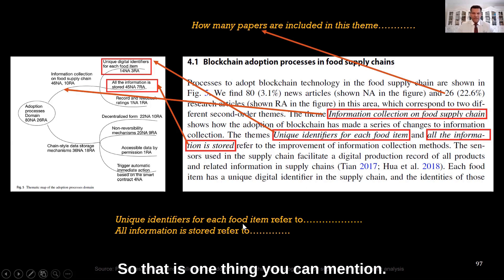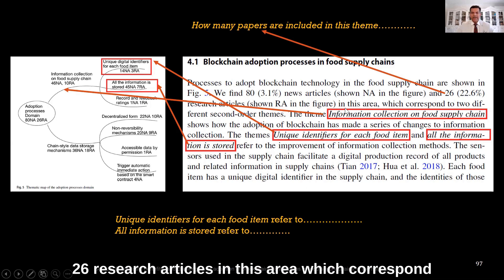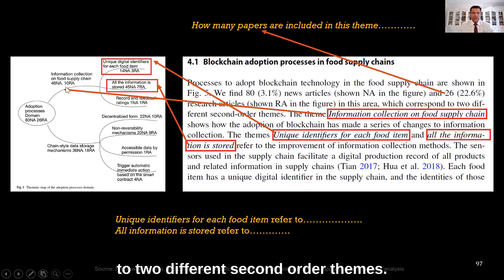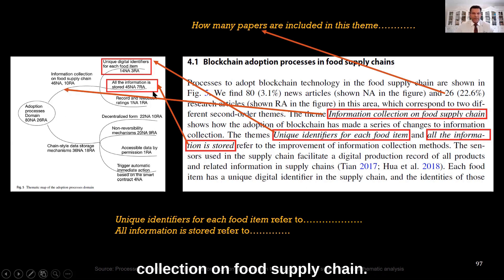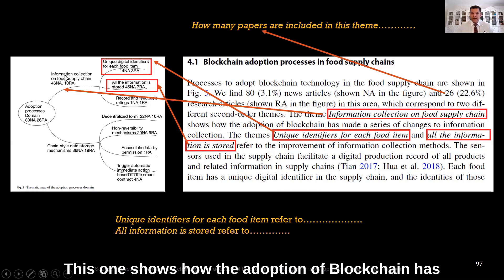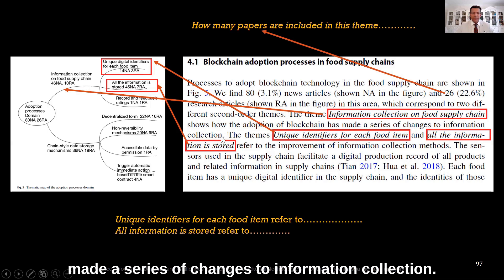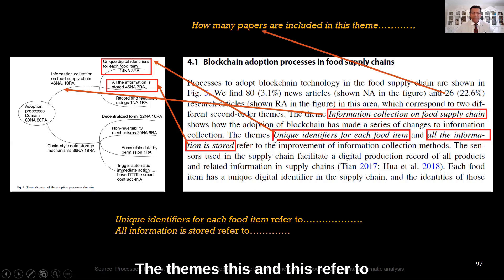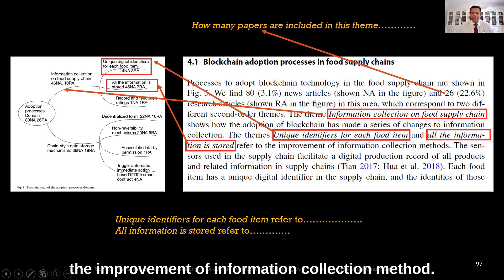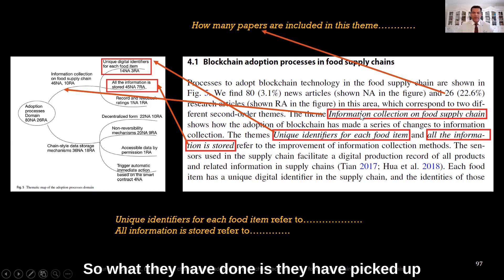That is one thing you can mention. Then they go on to say: we find 80 news articles and 26 research articles in this area, which correspond to two different second-order themes. The theme 'information collection on food supply chain' shows how the adoption of blockchain has made a series of changes to information collection.